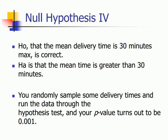My null hypothesis is that the mean delivery time is 30 minutes, and my alternate hypothesis is that the mean time is greater than 30 minutes. I randomly sample some delivery times and run the data through the hypothesis test, and my p-value turns out to be 0.001.